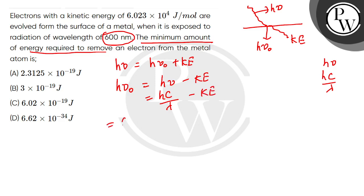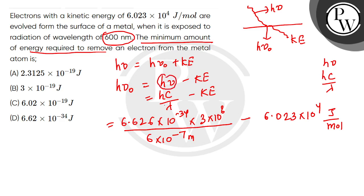The h value is 6.626 × 10^-34, c is 3 × 10^8, divided by λ which is 600 nanometers, so 6 × 10^-7 meters. And kinetic energy is 6.023 × 10^4 joules per mole. Now, there's a difference: this energy h·c/λ is per atom, but kinetic energy is per mole atom.